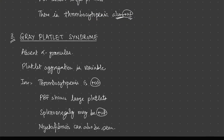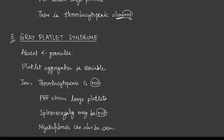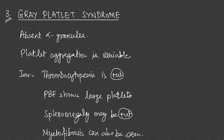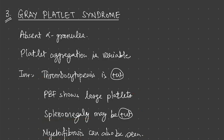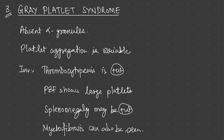Third is gray platelet syndrome. There are absent alpha granules. Platelet aggregation is variable — it may or may not aggregate, a very variable response. Importantly, there is thrombocytopenia. PBF will show large platelets, and there may be splenomegaly and myelofibrosis present. This is because thrombocytopenia stimulates the bone marrow to produce more megakaryocytes; the marrow releases immature platelets which are large in size into the peripheral blood.